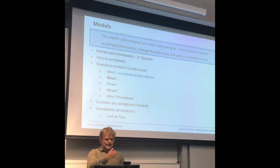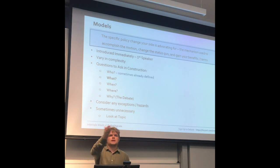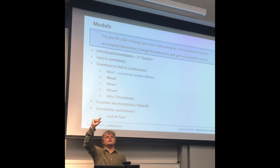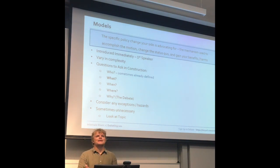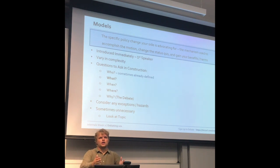Another thing with models is what I call hazards or exceptions. Sometimes you'll have a model that the negative will have some specific nitpick with that undermines your case — try to think of those things in advance. For example, if you're doing a topic about banning zoos and you define zoos as animals kept in captivity, you might just say this obviously doesn't include animals that literally cannot live in the wild. Those are an exception. It's good if you can outline those early, but you can probably patch that up later.